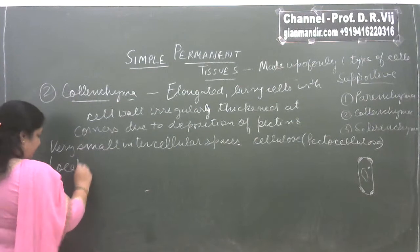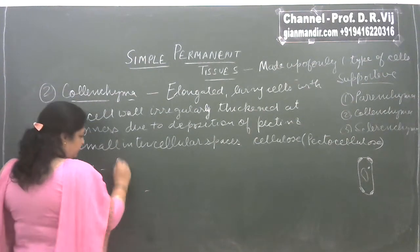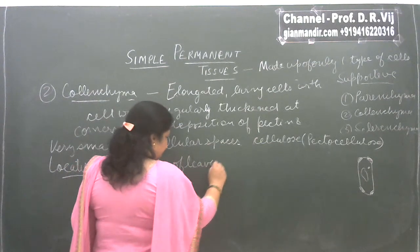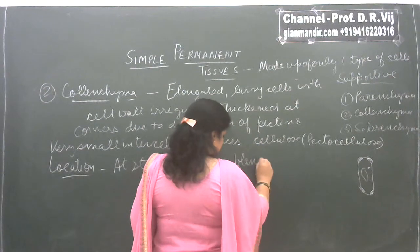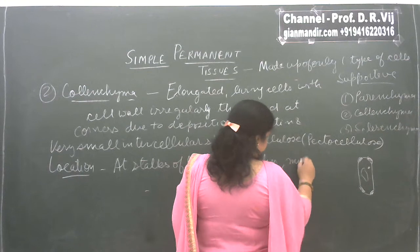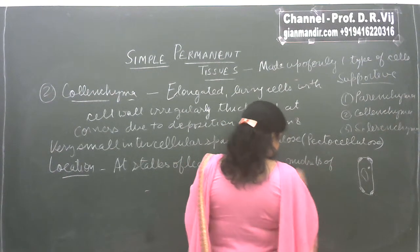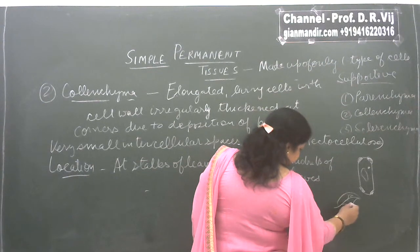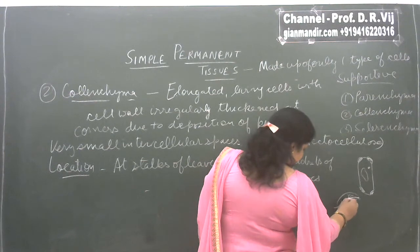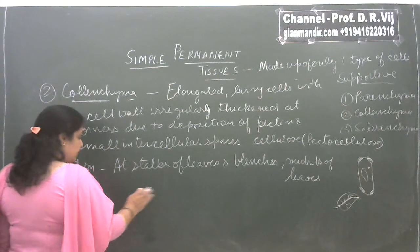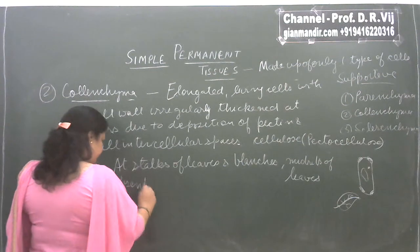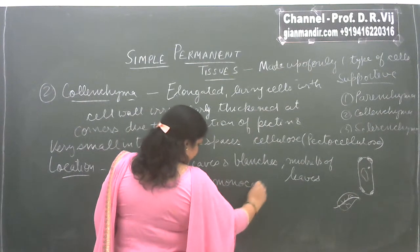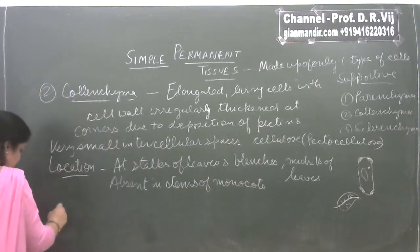Looking at the location of colenchyma: it is found in the stalks of leaves and branches, and also in the mid ribs of leaves. In dicot plants, leaves have reticulate venation, and the mid rib contains colenchyma. Notably, colenchyma is absent in the stems of monocots.